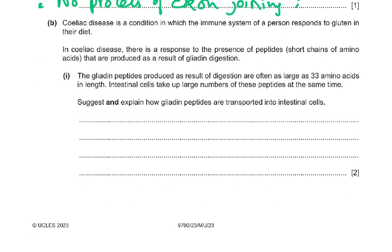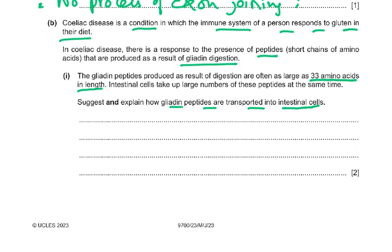Now the B part of the question: celiac disease is a condition in which the immune system responds to gluten in the diet. In celiac disease there is a response to peptides — short chains of amino acids produced as a result of gliadin digestion. The gliadin peptides are often as large as 33 amino acids in length. Intestinal cells take up large numbers of these peptides. Suggest and explain how gliadin peptides are transported into intestinal cells. Since they are large, they have to be taken up by endocytosis, using ATP and invagination of the membrane, forming an endocytotic vesicle.